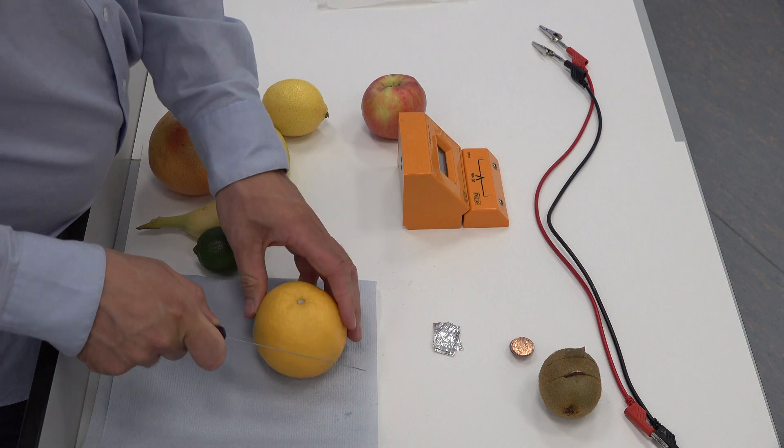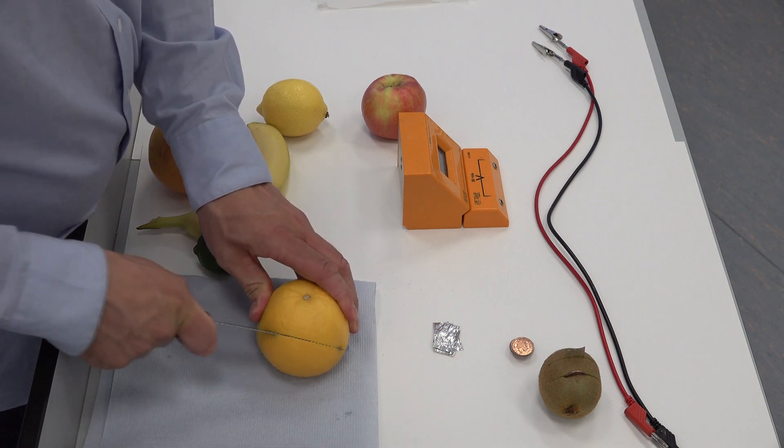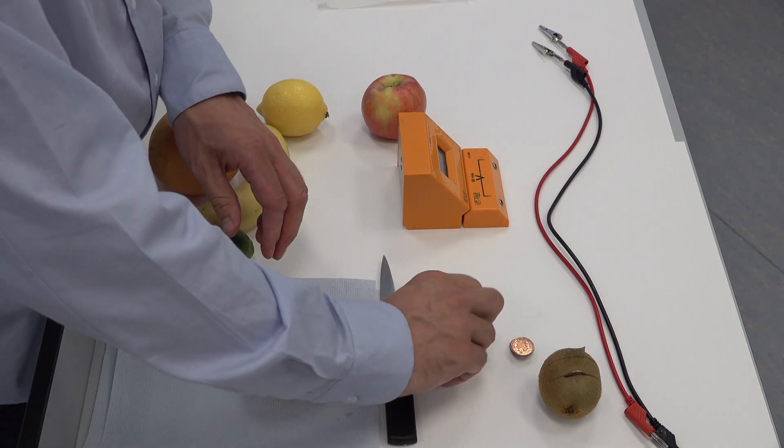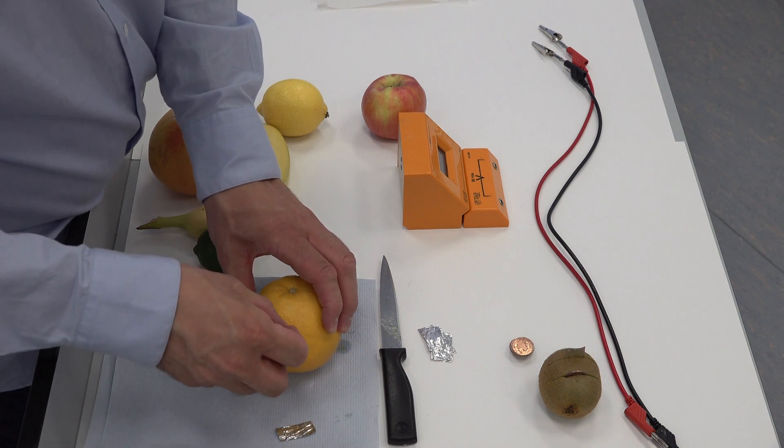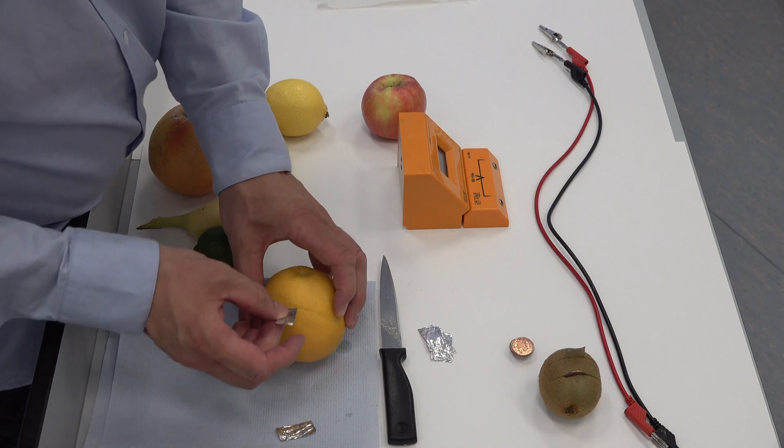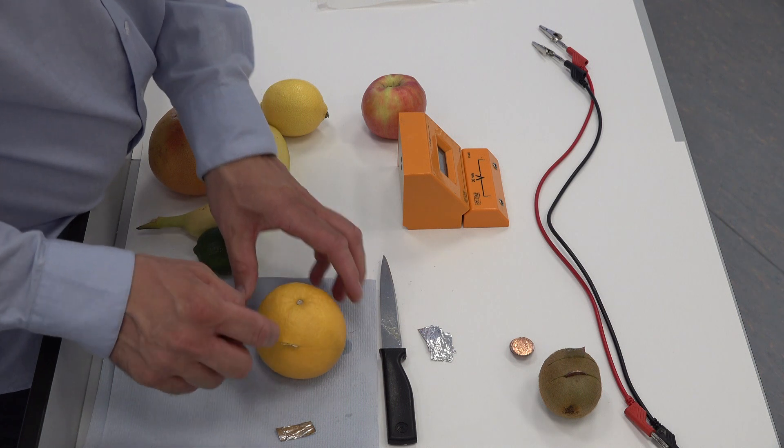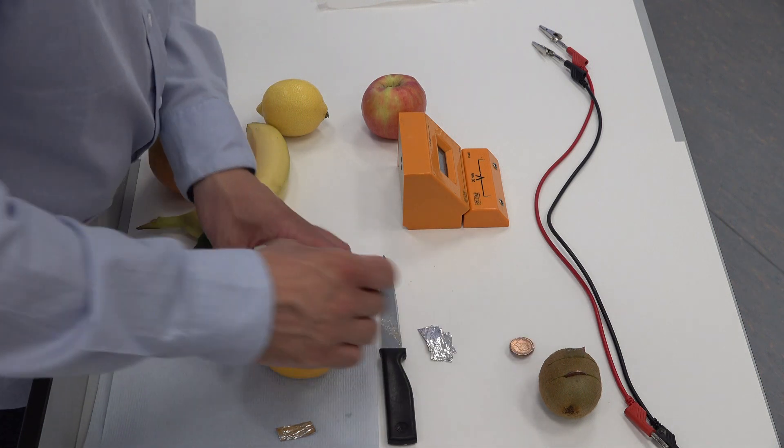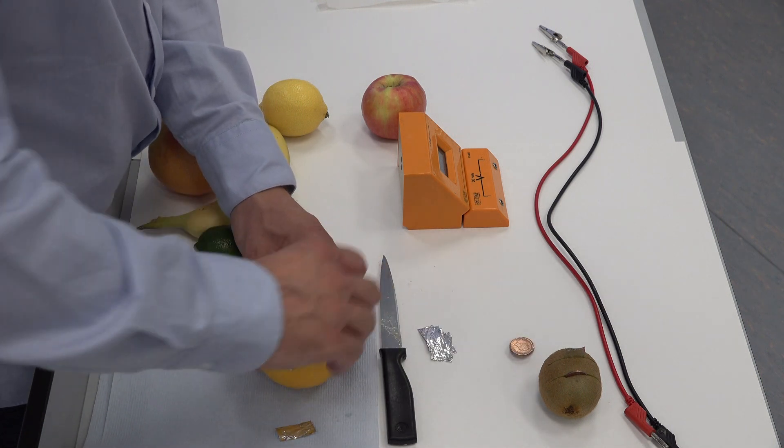We have an orange, and we put in the foil. Make sure you leave a little bit sticking out so that you can attach the crocodile clip in a moment.